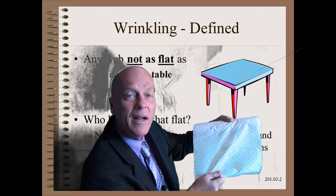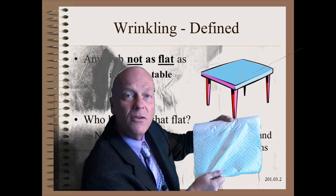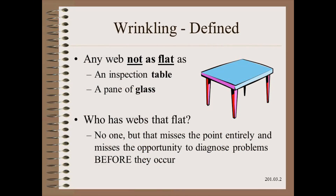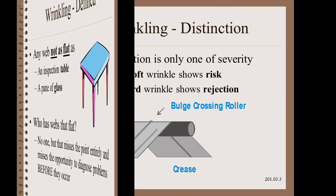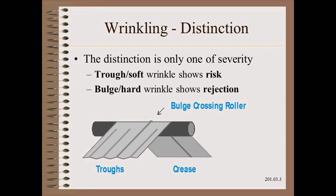Everything is in front of us to make that read. All we need to do is look. The distinction between a soft wrinkle and a hard wrinkle is merely one of severity. A soft wrinkle indicates risk. A hard wrinkle indicates you ignored the risk. By some models, if you see troughs in the open web span, you are already halfway to failure as a hard wrinkle.